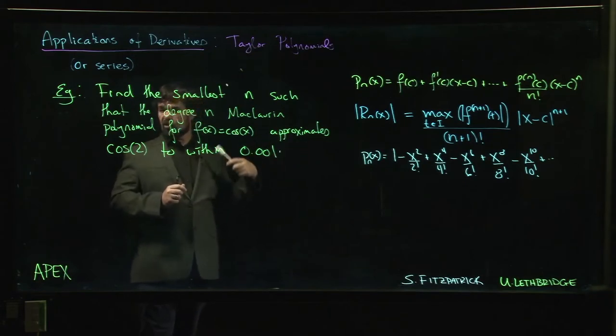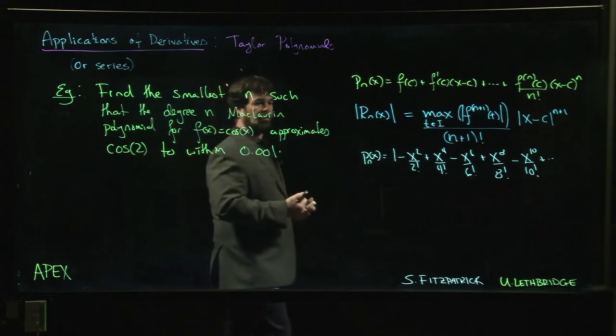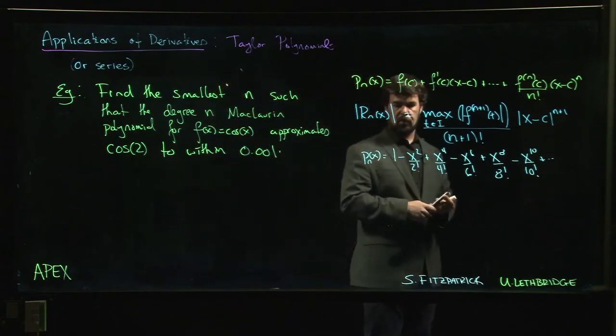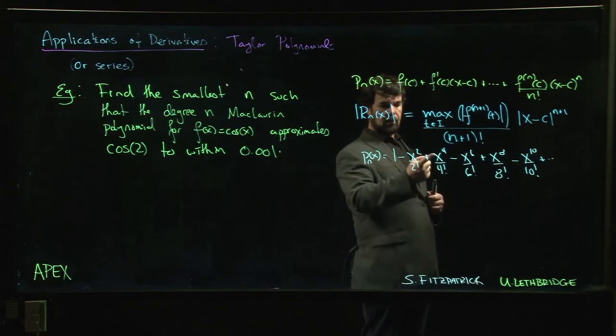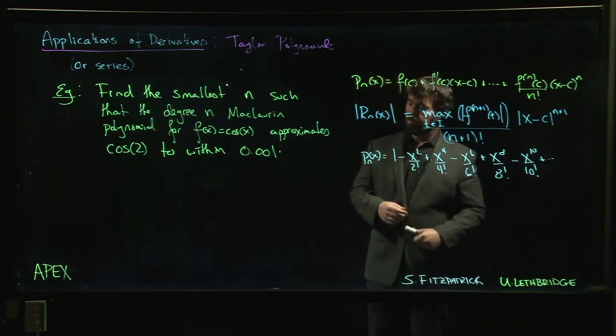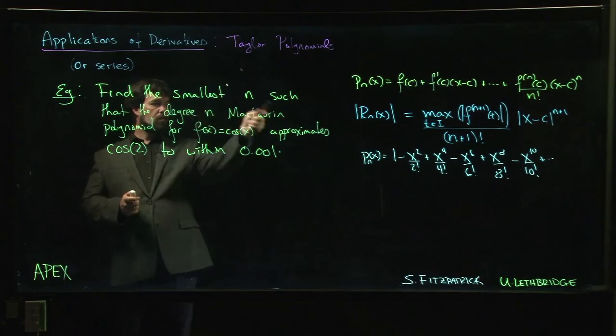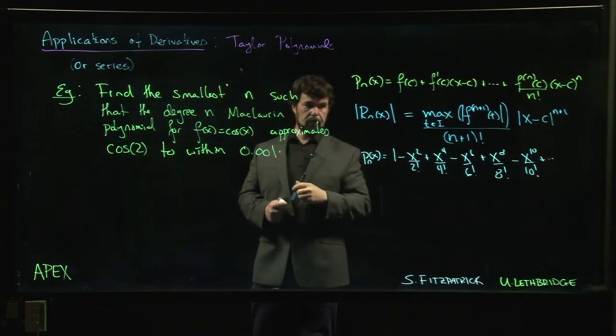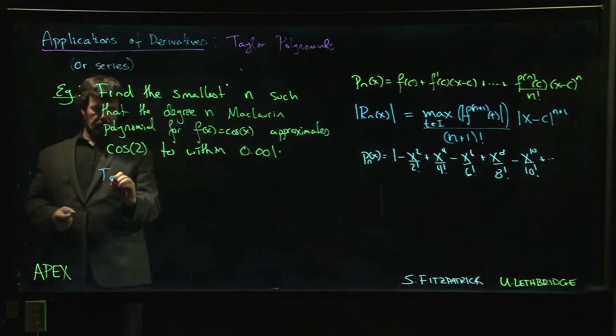So that's what the Taylor polynomial for cosine looks like. Maclaurin polynomial, we're centering at 0. We want to figure out how many of these terms do we need to include to get this degree of accuracy. So cos of 2 we'd approximate with P_n of 2, so we'd approximate with 1 minus 4 over 2 factorial plus 16 over 4 factorial minus 64 over 6 factorial and so on.